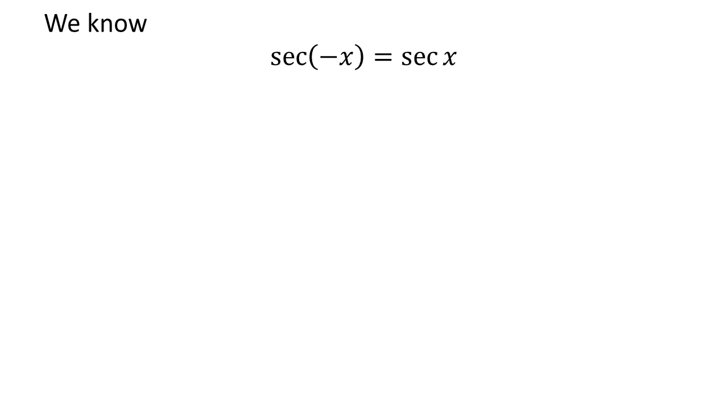As we know, the trigonometry identity secant of minus x is equal to secant of x.